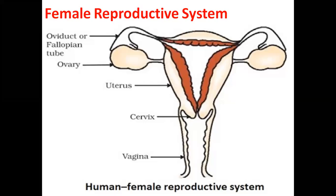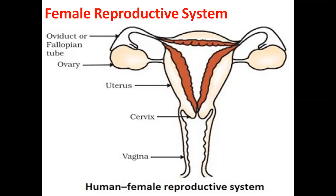The female germ cells, or the egg cells, are made in the ovaries. There is a pair of ovaries. From each ovary, each month, one egg cell is released. They are also responsible for the production of some hormones, that is female hormones. When a girl is born, the ovaries already contain thousands of immature eggs. These immature eggs start maturing during puberty. On reaching puberty, some of these start maturing.